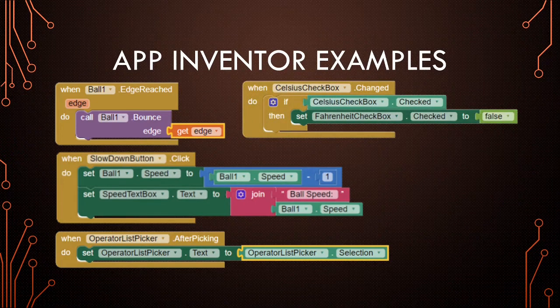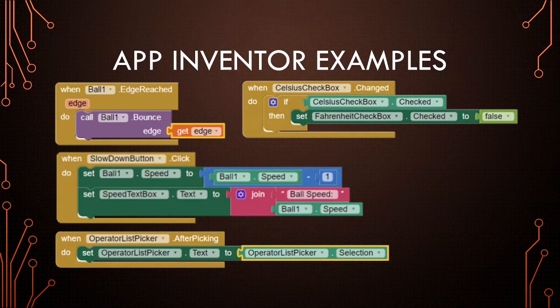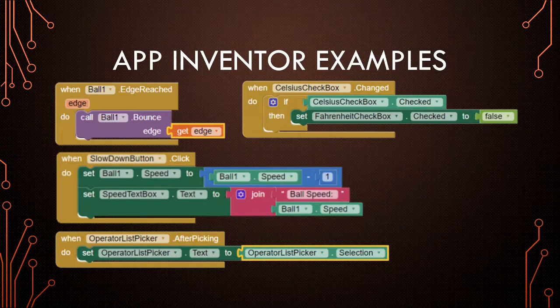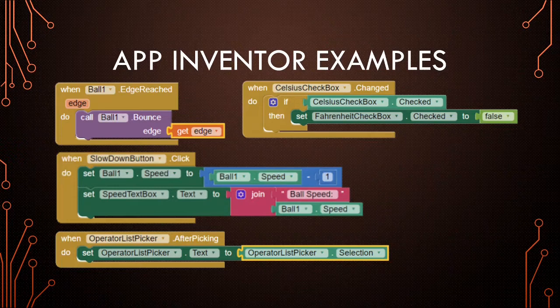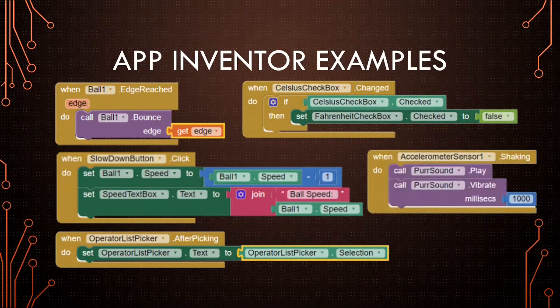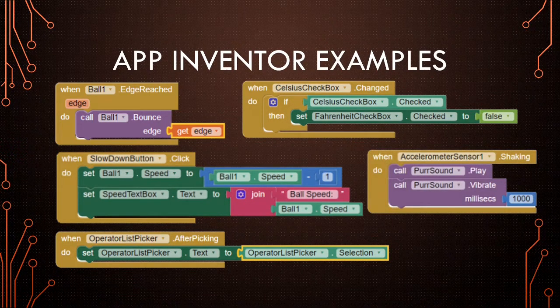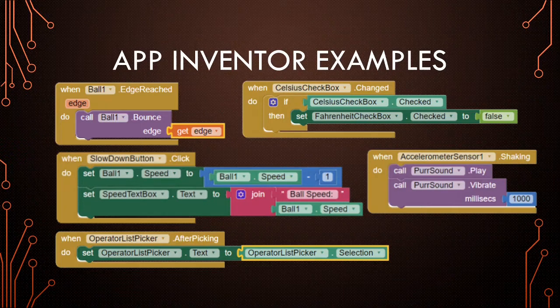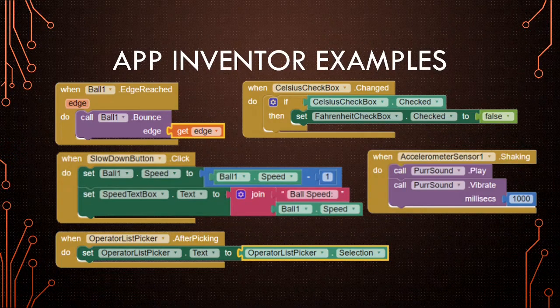In lesson number four, we had some check boxes. We had a Celsius check box control and whenever the user clicked on that and changed its state from either checked or unchecked, then the changed event ran and it checked to see if there was a check mark in there and did something if there was. And finally, in the last lesson that you just did, when you shook the device, there was an accelerometer object that checked to see if the device was shaking. And if it did, then it played the sound and vibrated for a second.